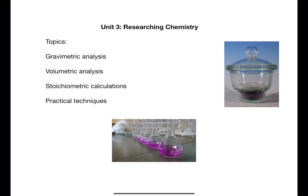Unit 3 is researching chemistry. This unit is often taught throughout the year as it helps to give you the skills needed for your project. Gravimetric analysis is analysis using a balance, and different techniques with associated calculations are covered. Volumetric analysis is the use of titrations — two new types are introduced at Advanced Higher: complexometric titration and back titrations. Although new in their application, the calculations associated are very familiar.